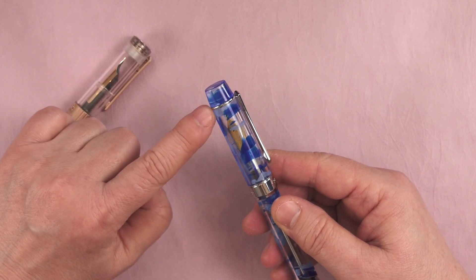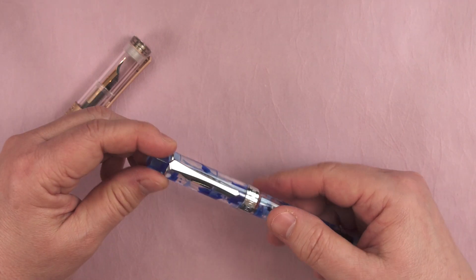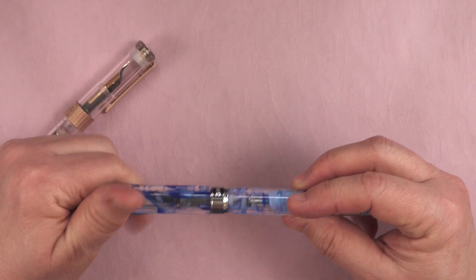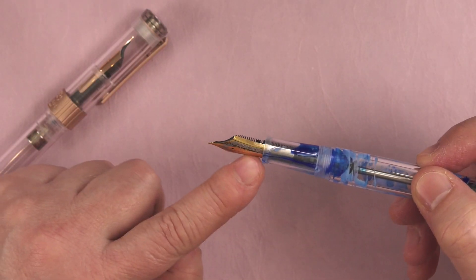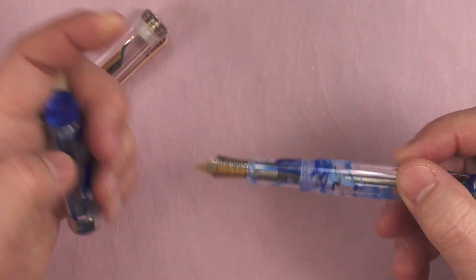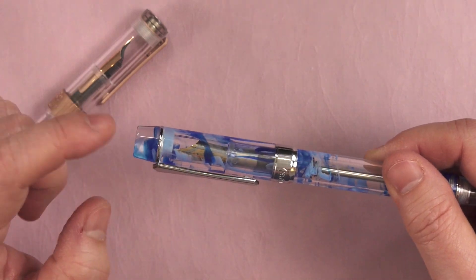For those of you that already have an older 355, this new improved version does not have a longer cap. There isn't room on the inside to put a longer nib in. As you can see, when you put the cap on, the end of the nib ends up right at the top of the cap.